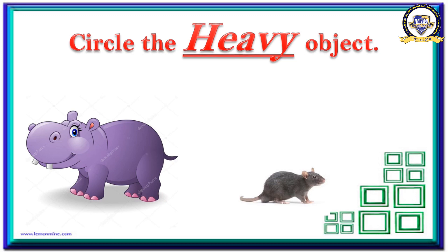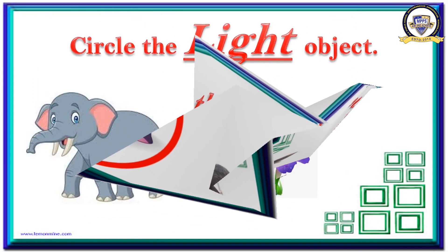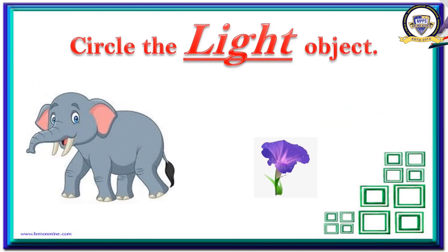What are the two objects? Can you name them? Hippopotamus and rat — which is the heavy object? Identify and tell me. The heavy object has to be circled. Yes, you are right! Hippopotamus is the heavier one and rat is the lighter one. Understood? Shall we move to the next question?